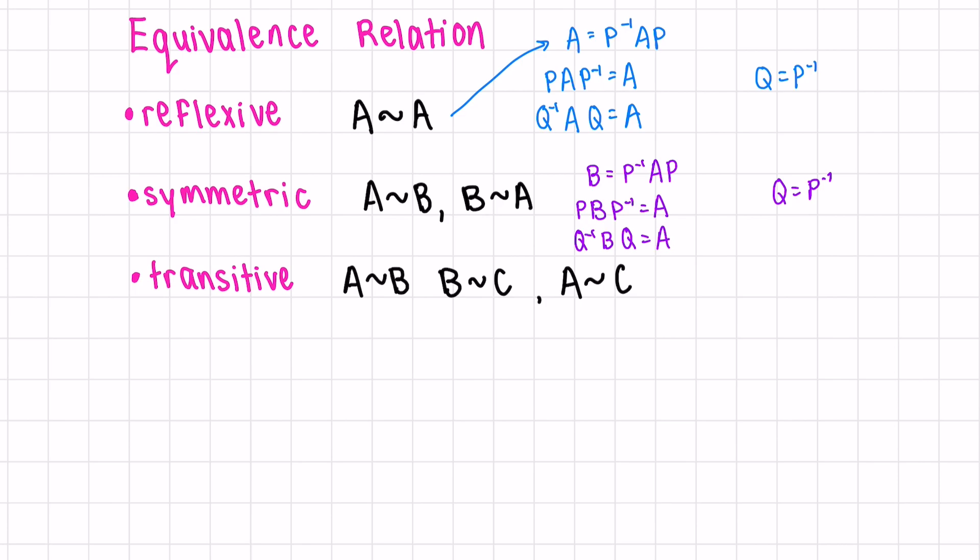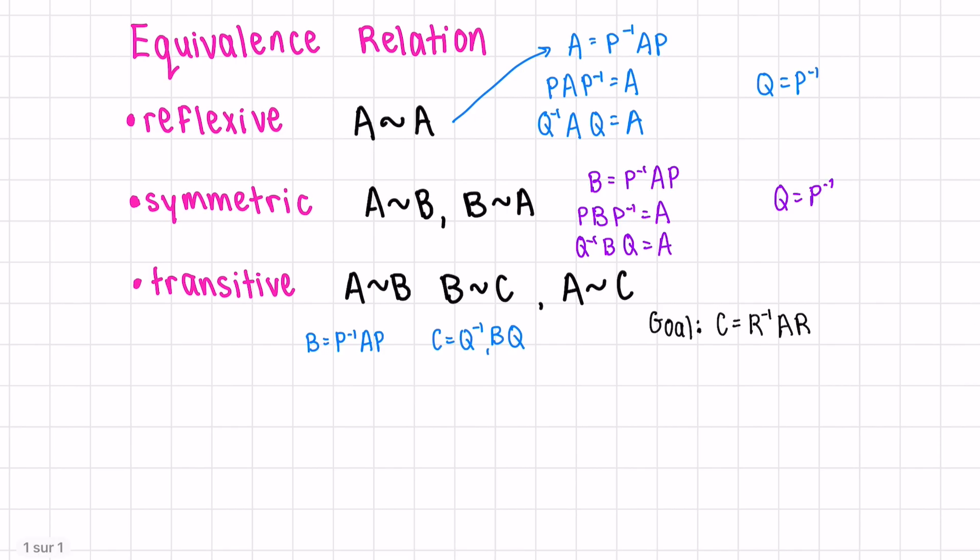Lastly, if A is similar to B and B is similar to C, let's write out what that means. Our goal is to write C as, let's say, R for some other invertible matrix, A, R. Since we want A in the middle, let's plug in our expression for B.